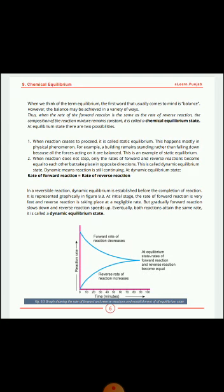Number one: static equilibrium. Number two: dynamic equilibrium. Static equilibrium is when reaction ceases to proceed. This happens mostly in physical phenomena, not in chemical phenomena. For example, a building remains standing rather than falling because all forces acting on it keep it balanced — this is an example of static equilibrium, where the reaction stops and never reverses.